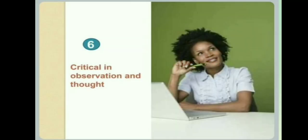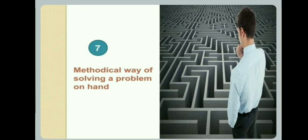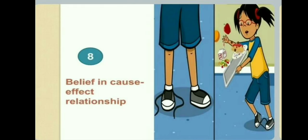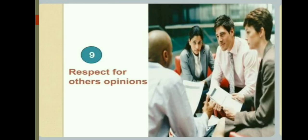The sixth characteristic is being critical in observation and thought — the person who has a scientific attitude always thinks critically and observes critically. The seventh is a methodical way of solving problems — he always solves problems in a systematic way. The eighth is belief in cause-and-effect relationships. The ninth is respect for others' opinions.